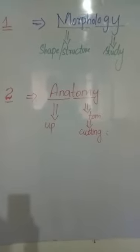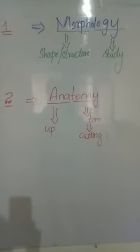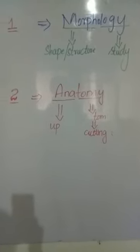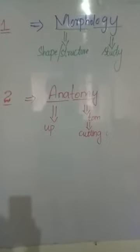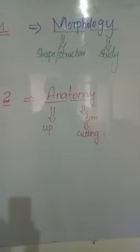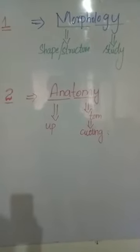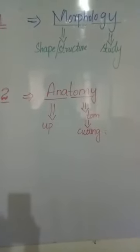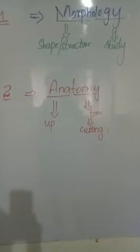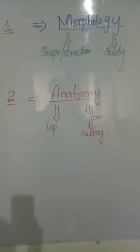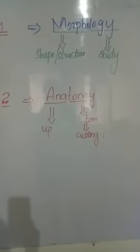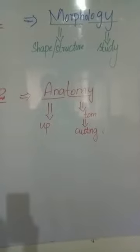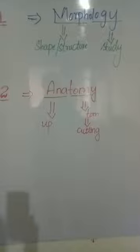Our next term is anatomy — the study of the internal structure of living organisms. The word anatomy is derived from the word 'tome' meaning cutting. By cutting or dissecting the upper layers of a living organism, we can study its internal structures. So anatomy is basically the study of internal structure by dissecting the upper layers.